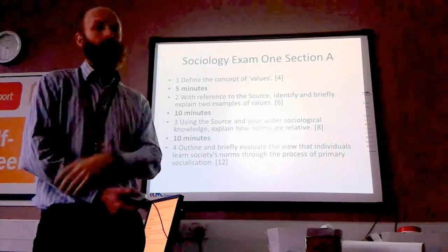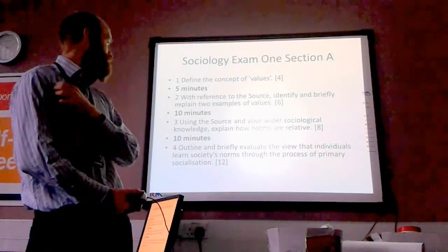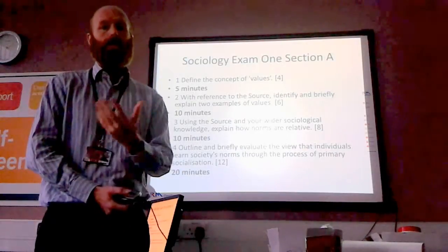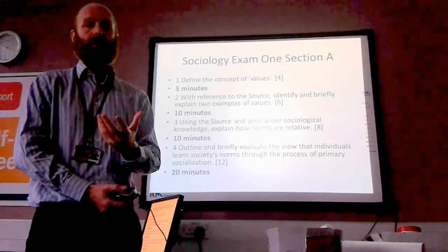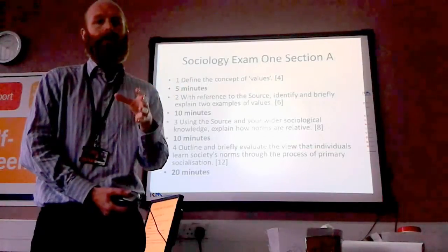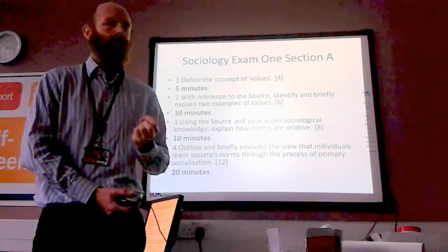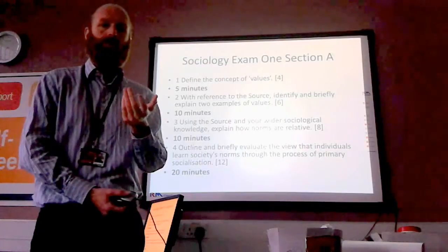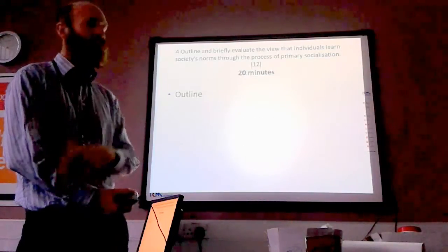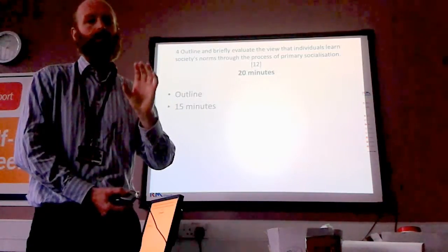Question four, 12 marks: outline and briefly evaluate the view that individuals learn society's norms through the process of primary socialisation. Most of this answer — about 15 minutes — is going to be explaining how primary socialisation is important in shaping norms. You can give three or four paragraphs with evidence showing that norms are learnt through primary socialisation. For example, the functionalist view about norms learnt in the family. You're covering three or four points with different studies, key names, and perspectives.